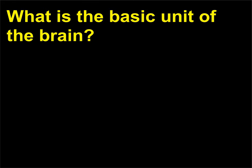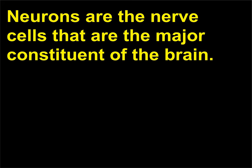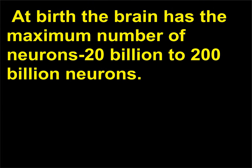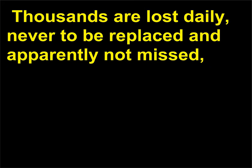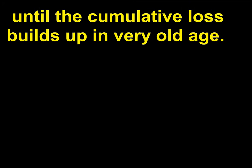What is the basic unit of the brain? Neurons are the nerve cells that are the major constituent of the brain. At birth the brain has the maximum number of neurons — 20 billion to 200 billion. Thousands are lost daily, never to be replaced and apparently not missed, until the cumulative loss builds up in very old age.